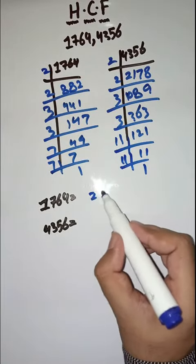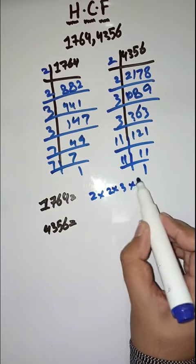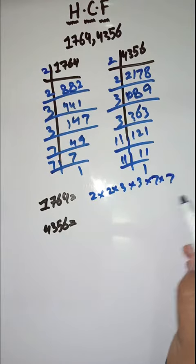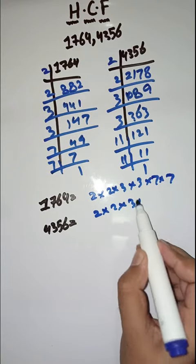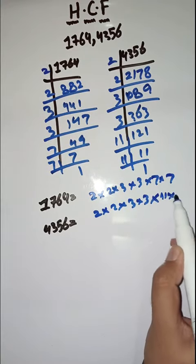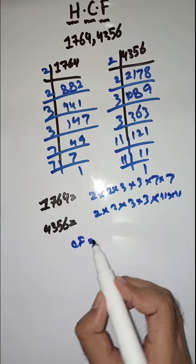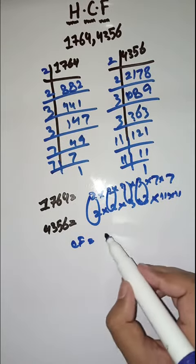So, prime factors of 1764 are 2, 2, 3, 3, 7, 7. And prime factors of 4356 are 2, 2, 3, 3, 11, 11. That's it.